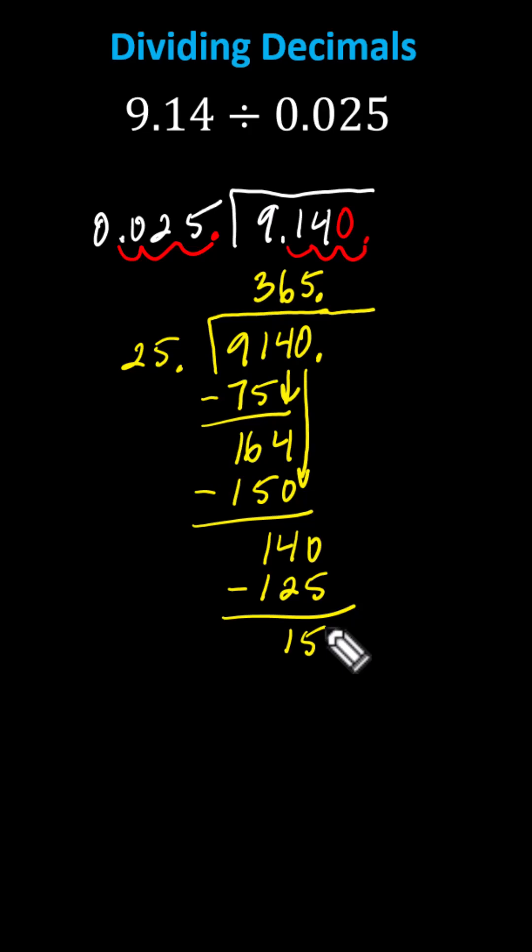Notice here we have a remainder, but because we're dividing decimals, we continue by placing a 0 to the right of the decimal point of the dividend here. Bring it down and repeat the process. We now determine how many 25s are in 150, which is exactly 6. We place a 6 to the right of the decimal point in the quotient. Multiply by the divisor. 6 times 25 is 150. Subtract. And finally, we have a difference of 0, so we stop.